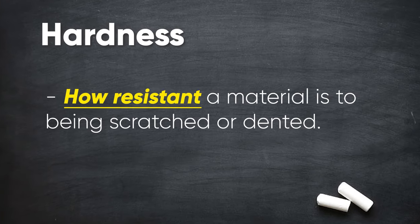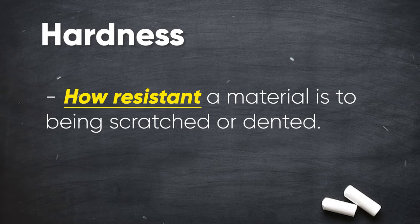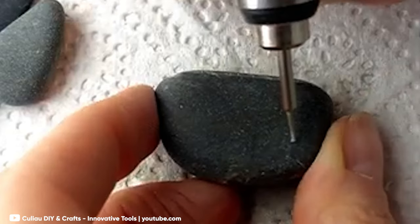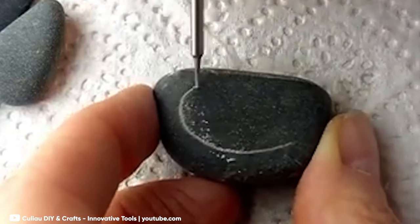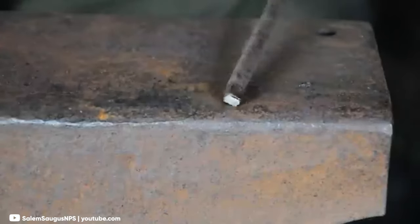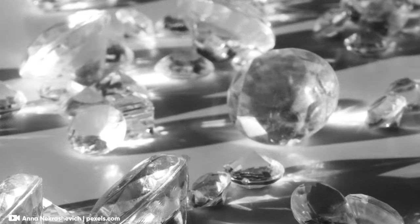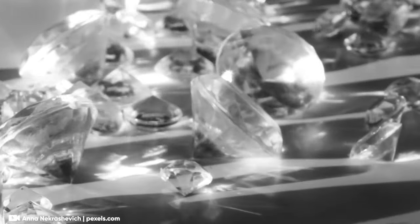First on the list is hardness. This property tells us how resistant a material is to being scratched or dented. For example, rocks are hard but you can scratch them with a knife, iron is harder but you can deform it with a sledgehammer, and diamonds are super hard which is why diamonds are used to cut other materials.